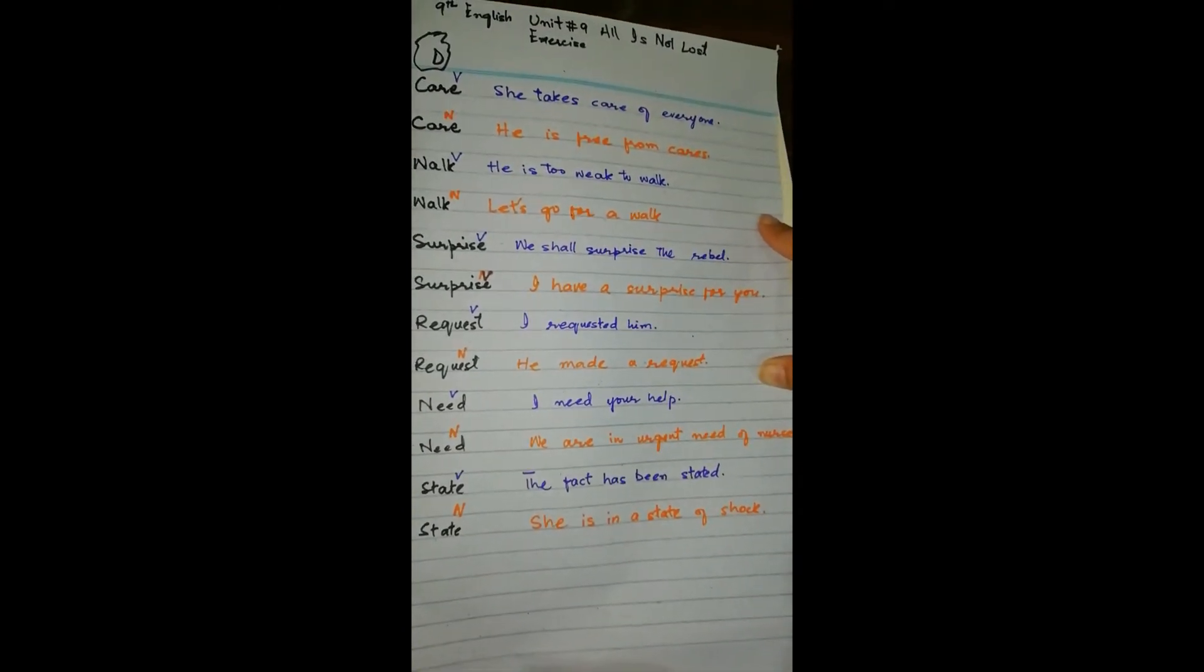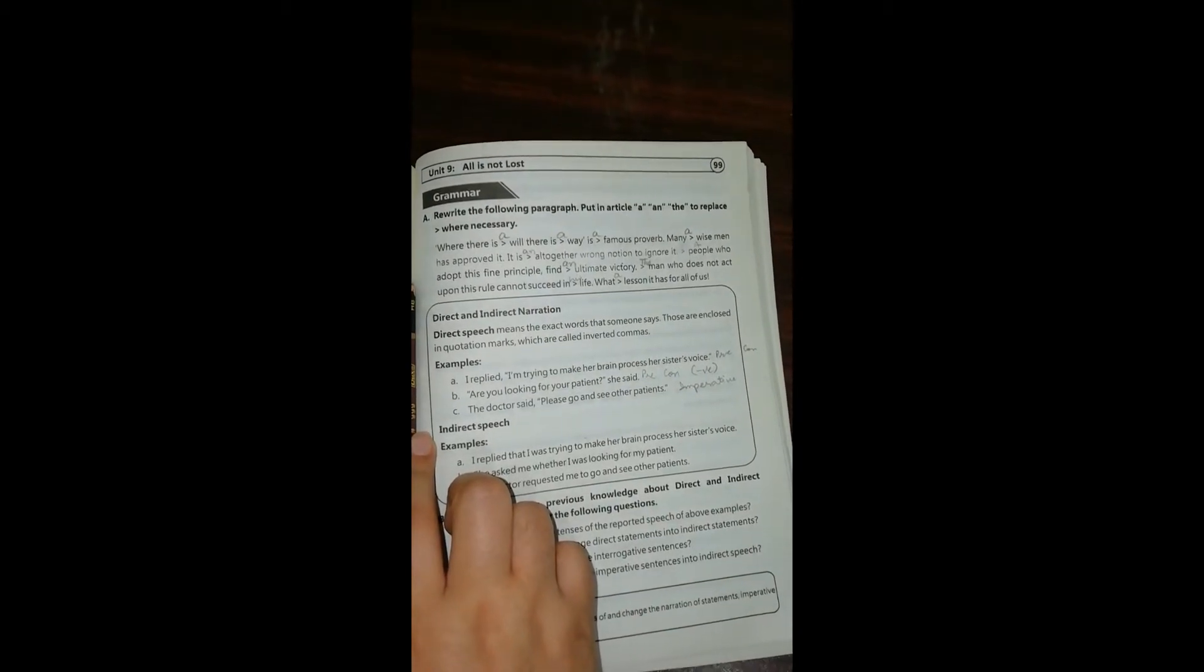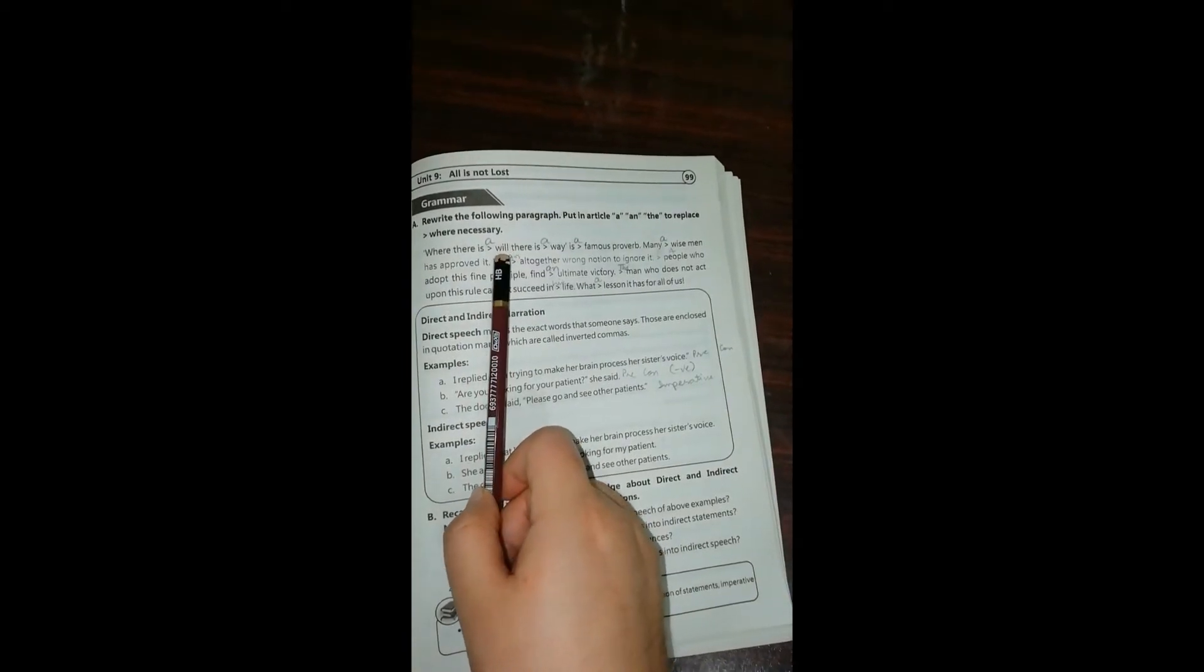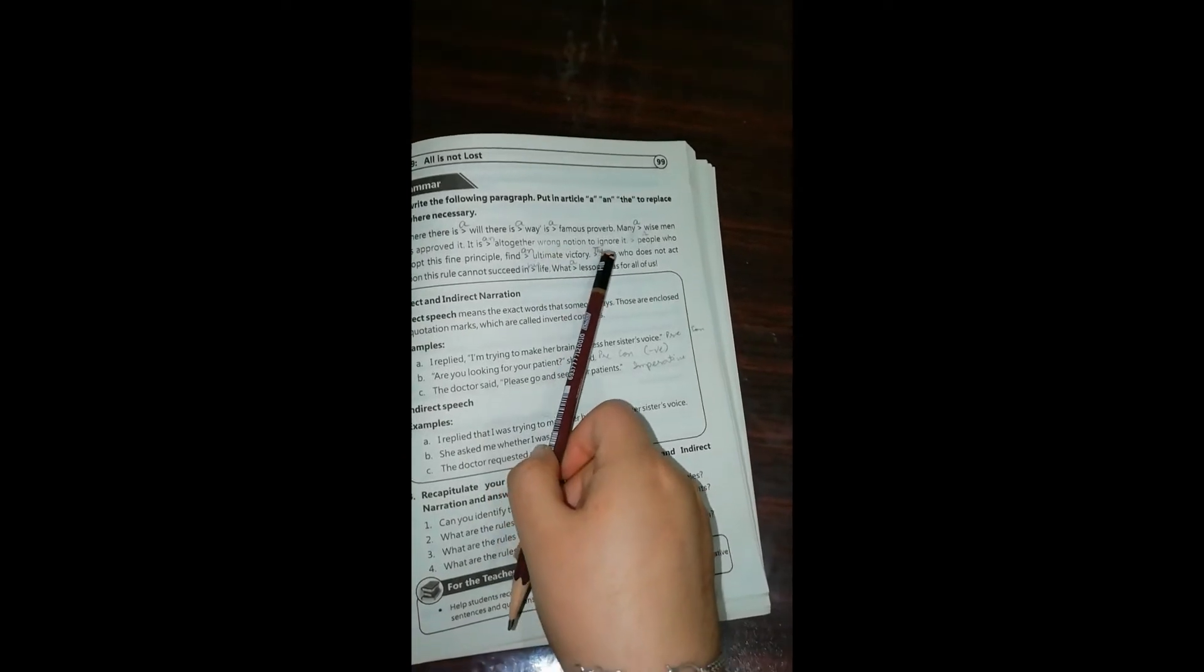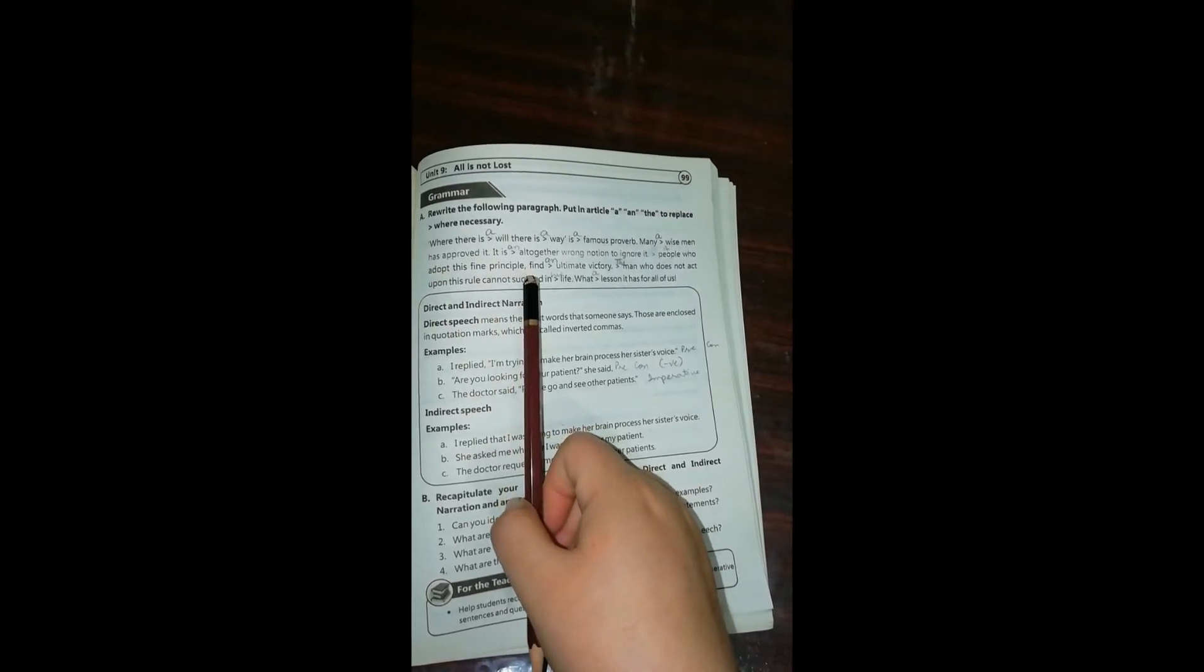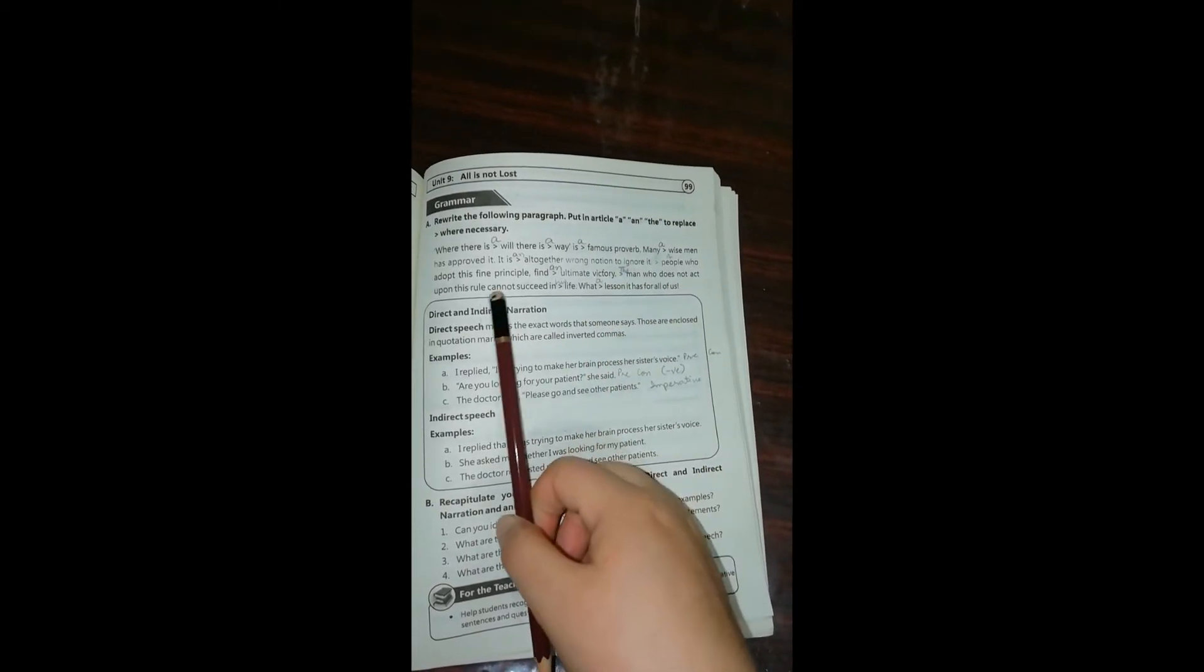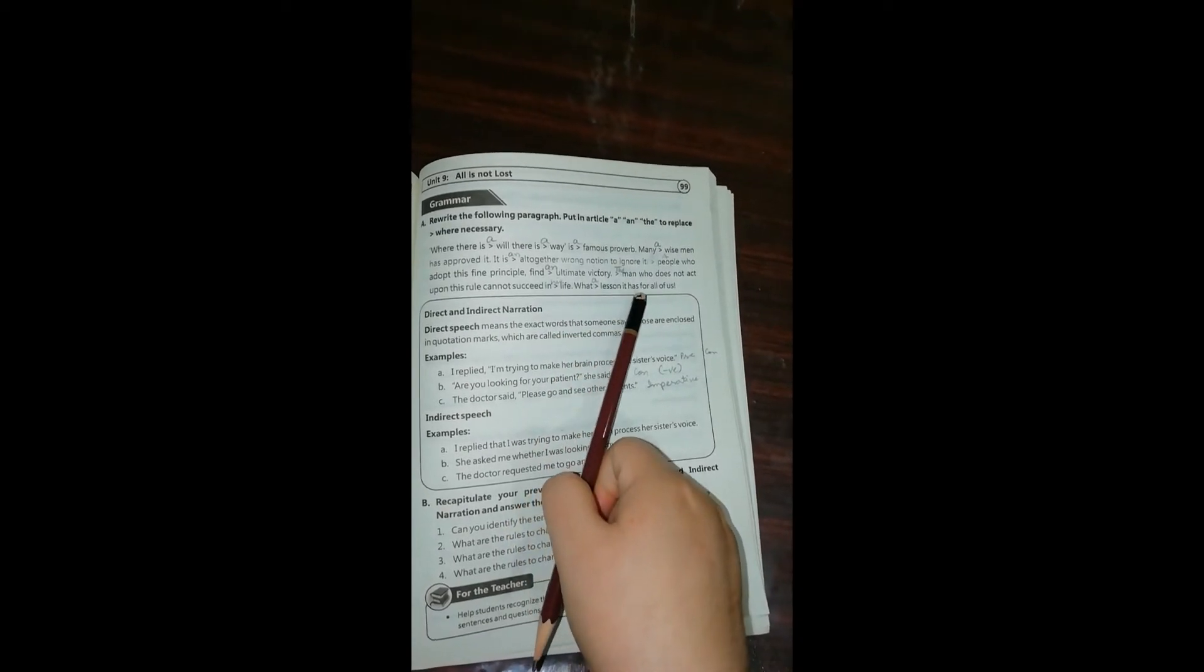Next we have to read the following paragraph and put articles a, an, and the to replace these signs where necessary. Where there is a will, there is a way. It's a famous proverb. Many a wise man has approved it. It is altogether wrong notion to ignore it. The people who adopt this fine principle find ultimate victory. The man who does not act upon this rule cannot succeed in his life. What a lesson it has for all of us.